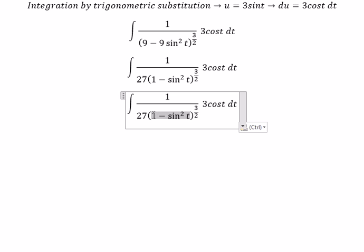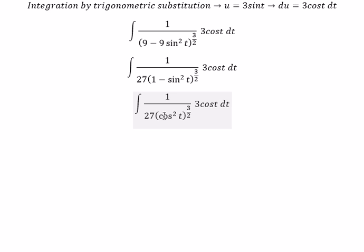Cos t to the power 3/2 gives us cos³ t. With the 27, we have 27 cos³ t. Now we have cos² t with the power 3/2, which gives us 27 cos³ t.